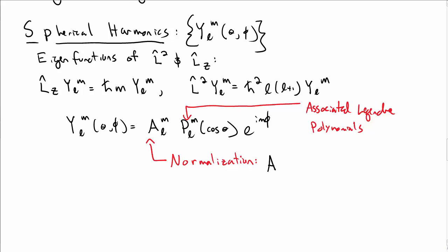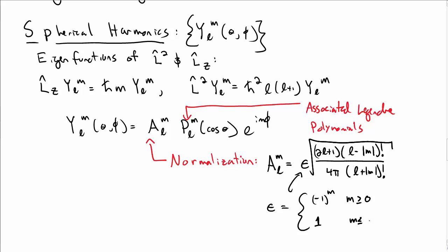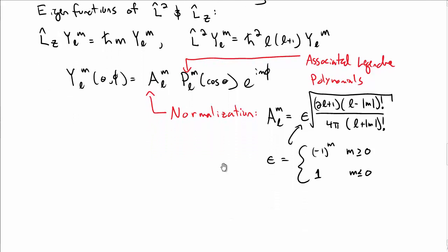And the A_lm, we already mentioned, is some normalization constant. And I'm just going to write down that normalization constant without proof. So it turns out it's ε times the square root of [(2l+1)(l-|m|)! / (4π(l+|m|)!)], where ε can be one of two things: it's either (-1)^m for m ≥ 0, or 1 for m ≤ 0. Yikes. But those are the normalization constants. In practice, we don't use them too much.